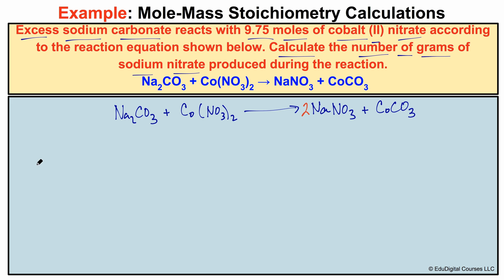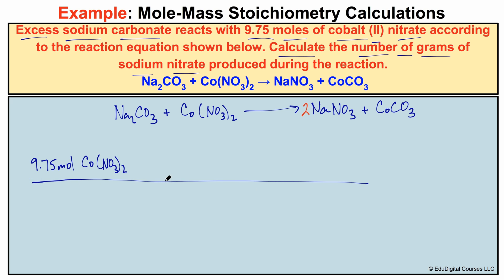In this example we're starting with 9.75 moles of cobalt-2 nitrate, and we're trying to figure out the number of grams of sodium nitrate produced. To find grams of sodium nitrate, we first need to figure out the number of moles of sodium nitrate, and we do that using a mole ratio between cobalt-2 nitrate and sodium nitrate.